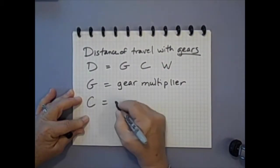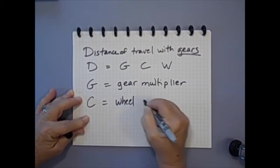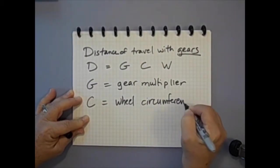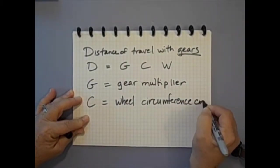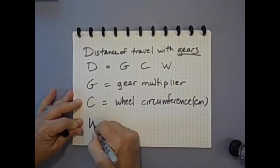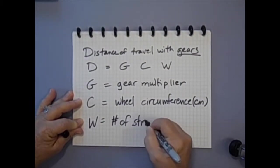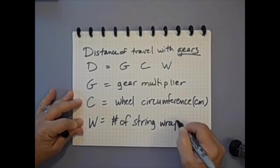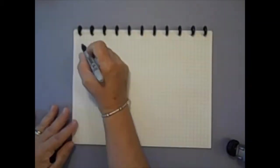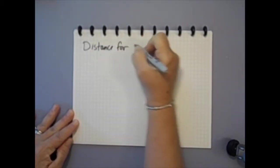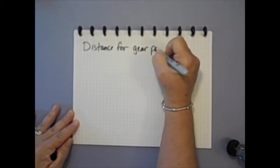Distance can be predicted with a calculation. When gears are used, the formula for predicting distance is D equals GCW, where distance D equals gear multiplier G times circumference of the wheels in centimeters C times the number of string wraps W. So, how far will a car with CD wheels, 10 string wraps, and a gear pairing of 40 to 20 travel? Let's do some math.